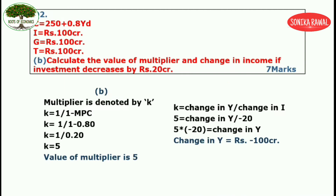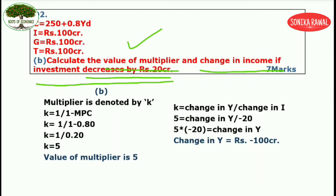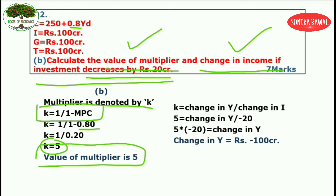Now question number 2 part B: calculate the value of the multiplier and change in income if investment decreases by 20 crores. The multiplier is denoted by symbol K. The formula is K equals 1 divided by (1 minus MPC). MPC is given as 0.8. Replace the value and finally K comes out to be 5. So the value of multiplier is 5.